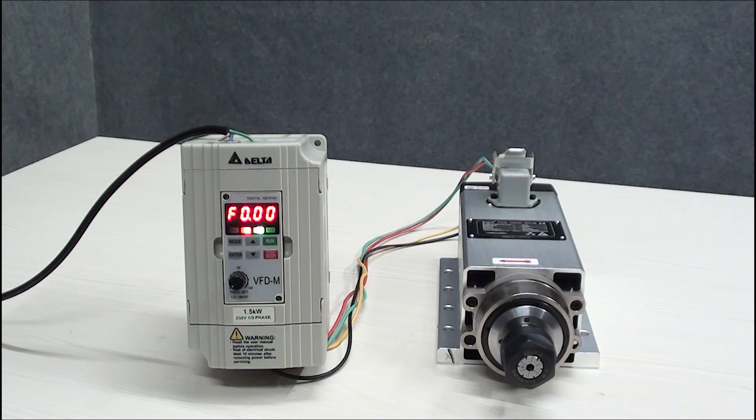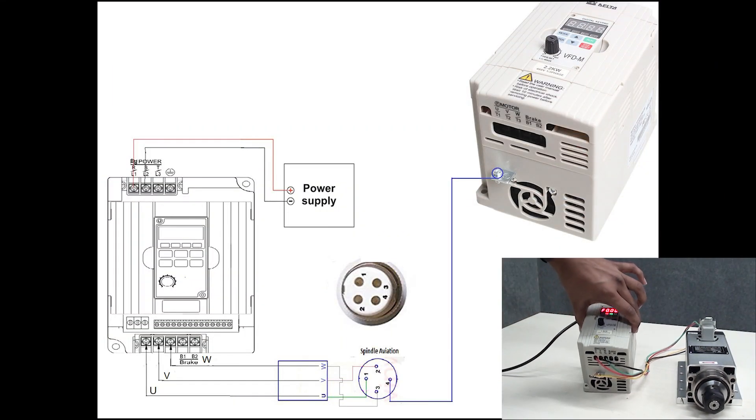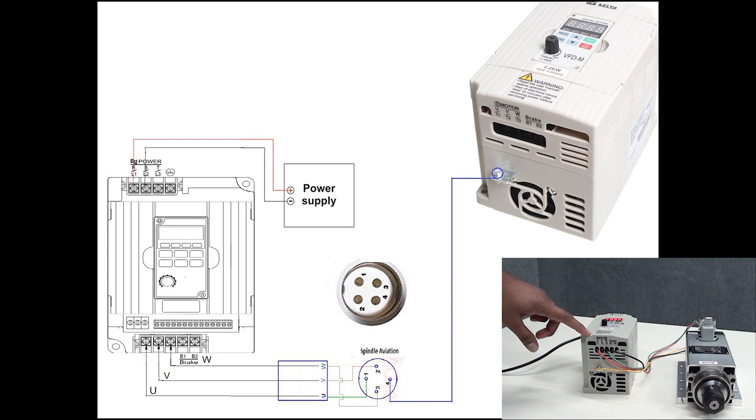Now let's see how to configure the spindle motor with VFD. First of all, you have to connect U, V, W of VFD to the spindle: U with the number one of aviation plug, V with the number two of aviation plug, and W with the third number of aviation plug. And the fourth number in the spindle you have to connect ground which is shown by yellow color of wire.